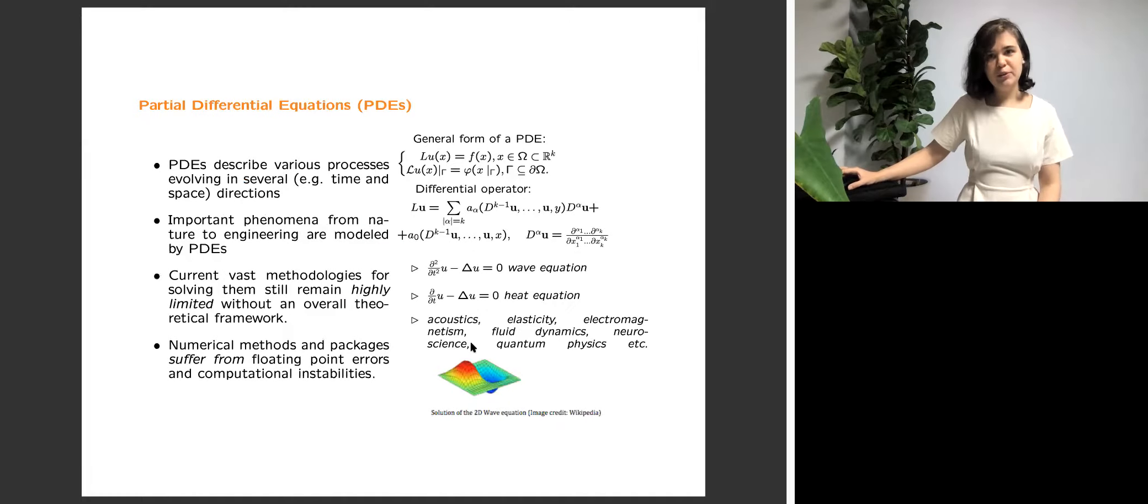First, let me remind you what are partial differential equations. They are describing very many various applications and processes evolving in several directions like time and space, maybe several dimensions like the applications I just showed you before. Important phenomena from nature and engineering are modeled by partial differential equations. Here on the upper right is a general form of a partial differential equation. These equations include some differential operator with partial derivatives and some additional conditions like maybe initial conditions at the time level zero or on the boundary of some domain. We want, for example, to find how the process evolves with time or inside this domain.